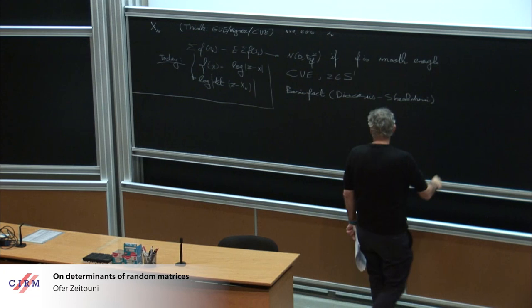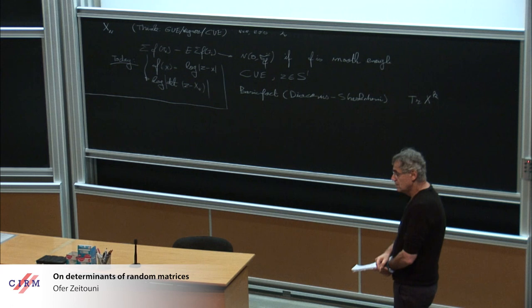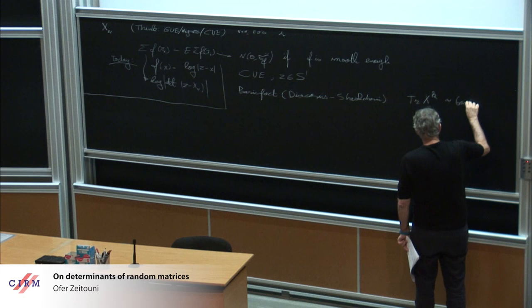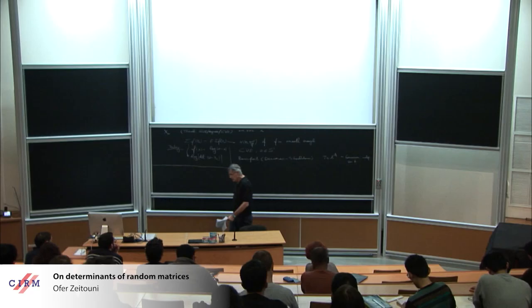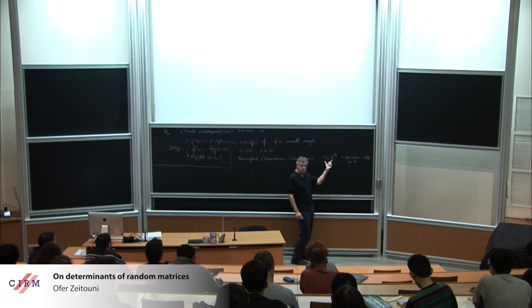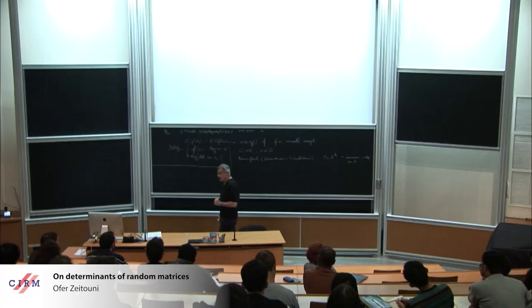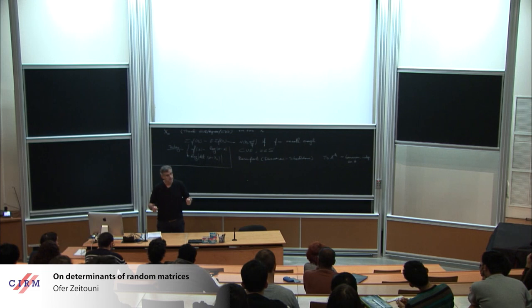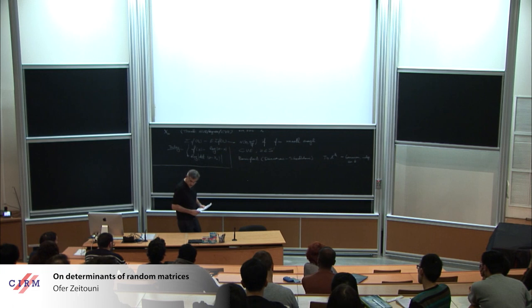Early on, almost 20 years ago, people started looking at the CUE, where z is in S1. CUE is just a random unitary matrix, Haar distributed. If you look at the trace of x to the k, this is very close to a Gaussian random variable. Those are Gaussian independent with variance k.